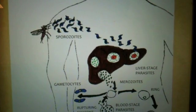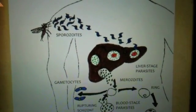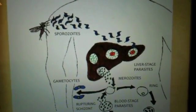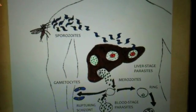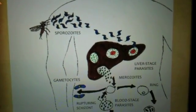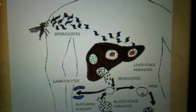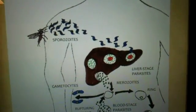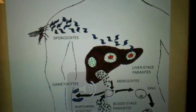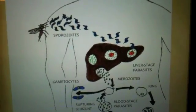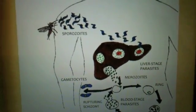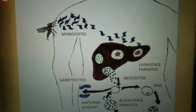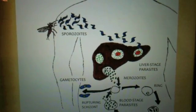In the human host, the sporozoites enter the bloodstream from the salivary glands and migrate to the liver. They infect liver cells where the sporozoites grow into merozoites. The merozoites rupture the liver cells and move to the bloodstream. In the blood, the merozoites infect erythrocytes where the parasites multiply further, periodically breaking out of the red blood cells and infecting new ones. Some of these merozoites develop into male and female gametocytes, which are taken up in the next blood meal by a female mosquito. And the cycle continues.